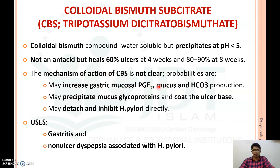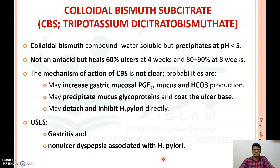The mechanism of action of colloidal bismuth subcitrate is not fully clear. It probably works by increasing gastric mucosal prostaglandin E, mucus, and bicarbonate production. It may also precipitate mucus glycoproteins, coat the ulcer base, and directly inhibit H. pylori. It is mainly used for the treatment of gastritis and non-ulcer dyspepsia associated with H. pylori infection.